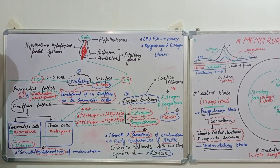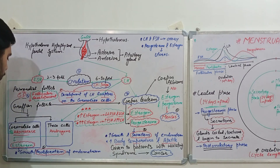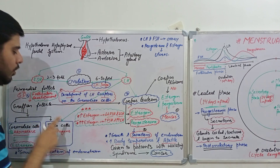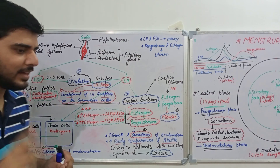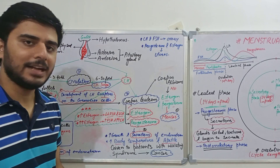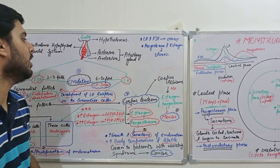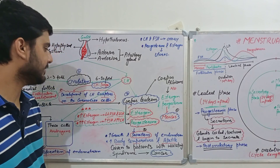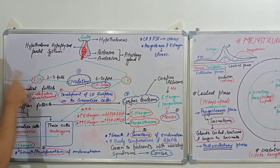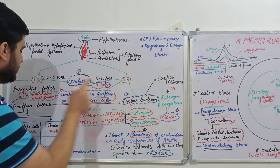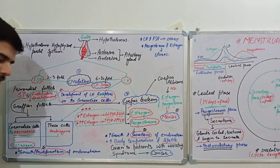The granulosa cells have surface receptors for follicle-stimulating hormone, and the theca cells have surface receptors for luteinizing hormone. This is analogous to males, where follicle-stimulating hormone acts on Sertoli cells and luteinizing hormone acts on Leydig cells. In females, follicle-stimulating hormone acts on granulosa cells while luteinizing hormone acts on theca cells.